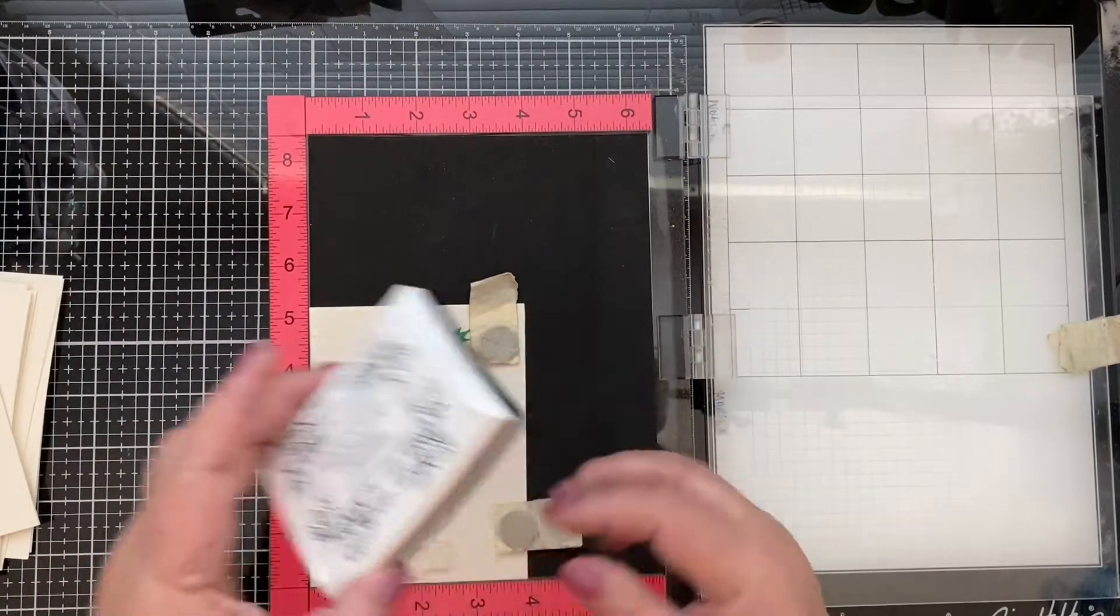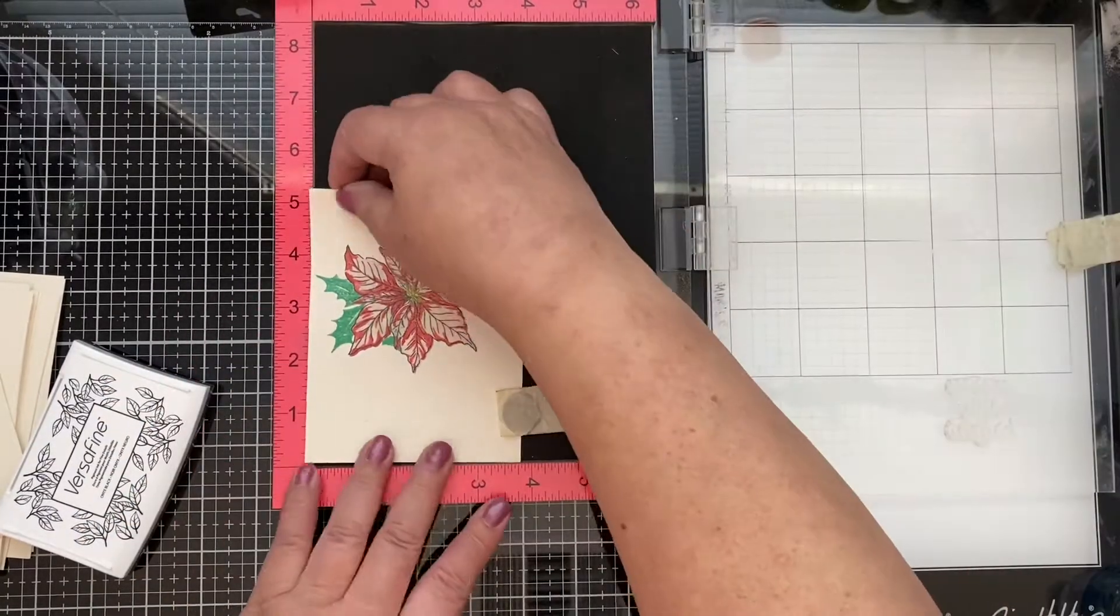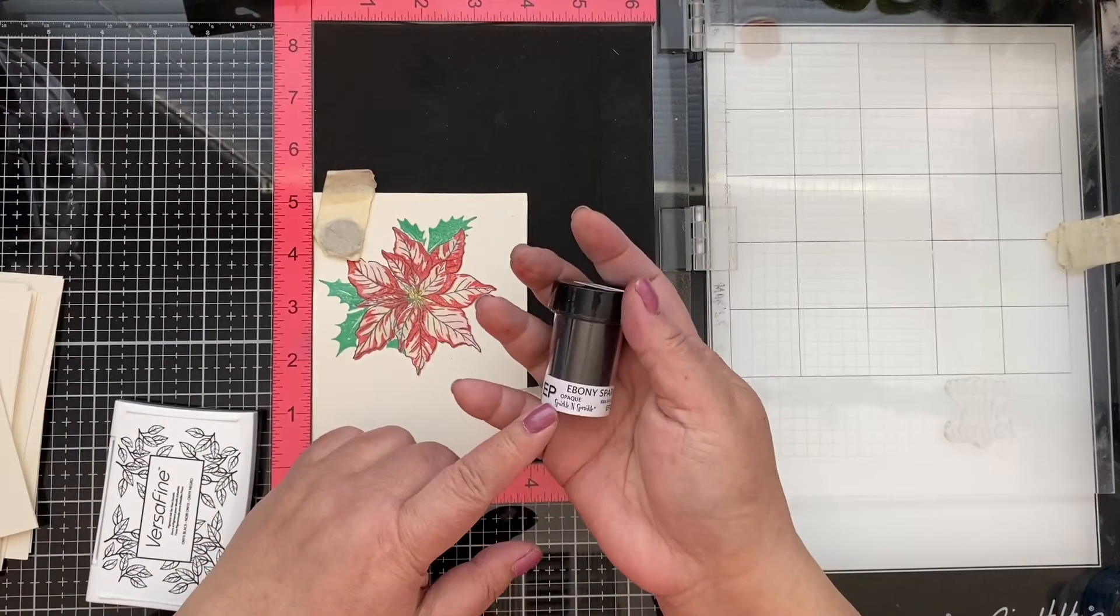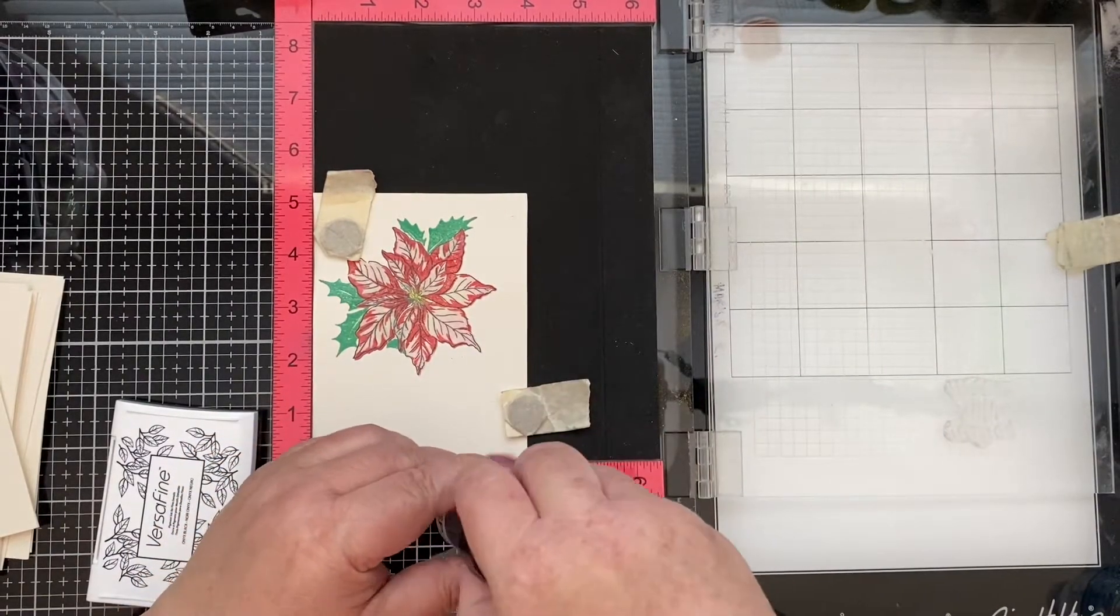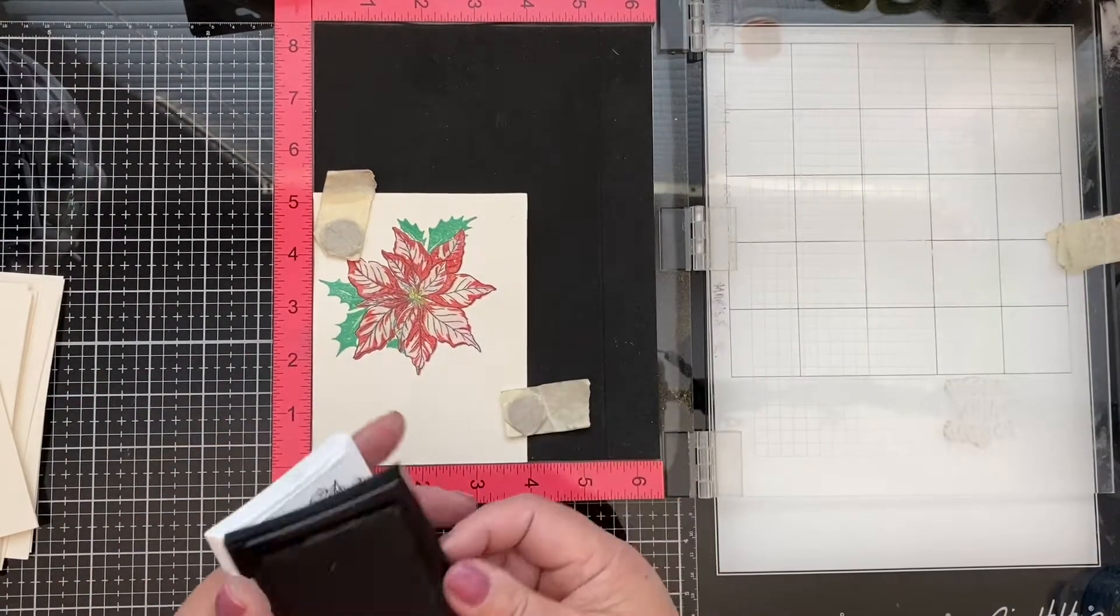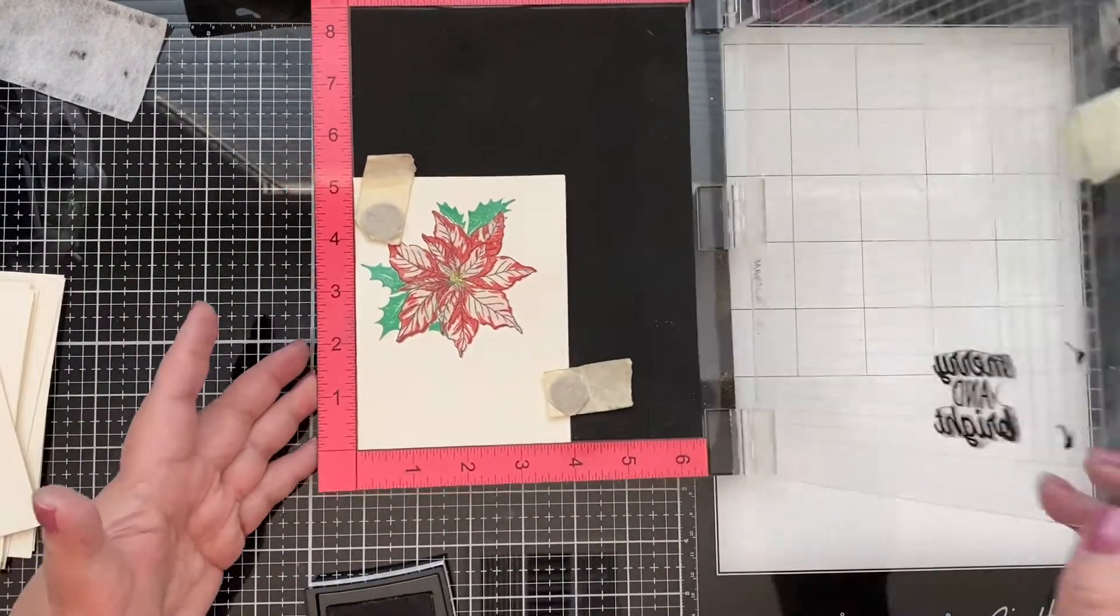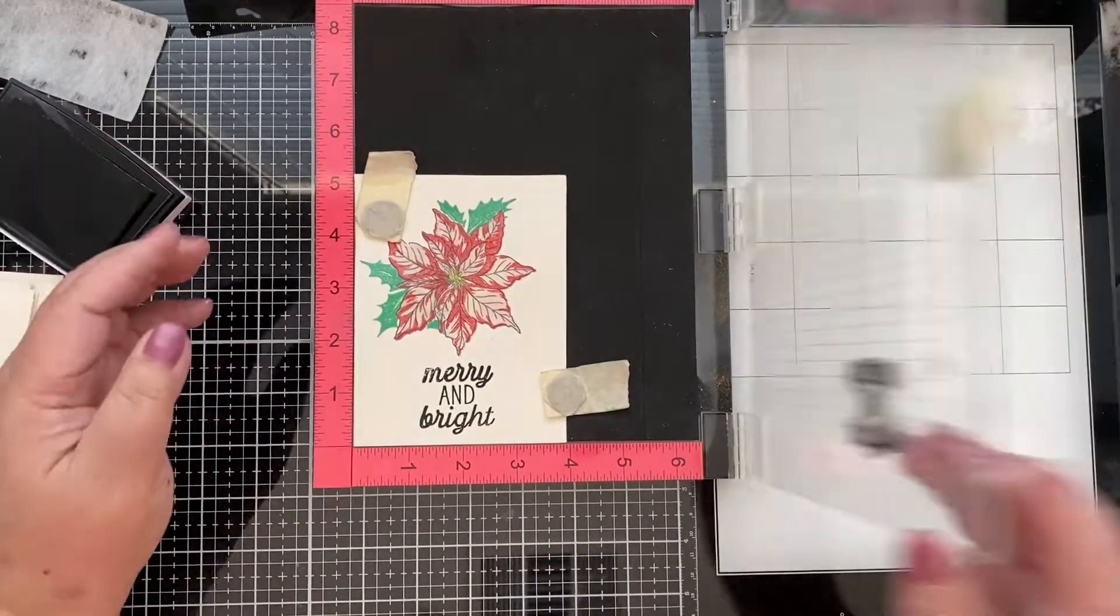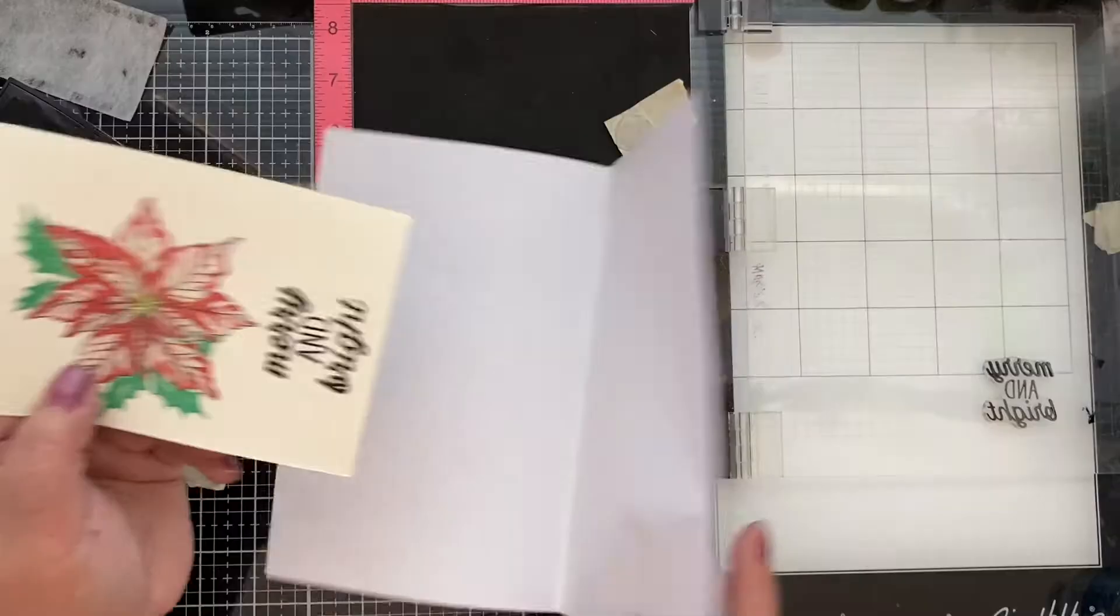And we're going to use our Versafine for this. So let me go ahead and close this up. I'm using the ebony spark again. I've used this already from a previous project. This is by sparkles and sprinkles. So I'm going to open this up and get it ready for our project. I'm going to double stamp this guys. Merry and bright, oh I love it.